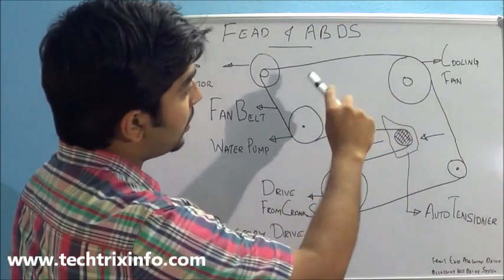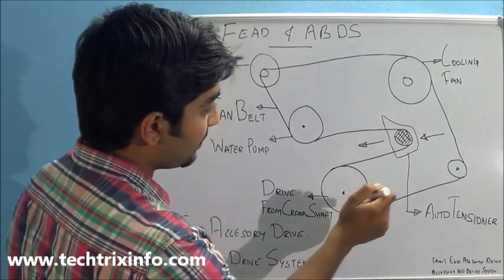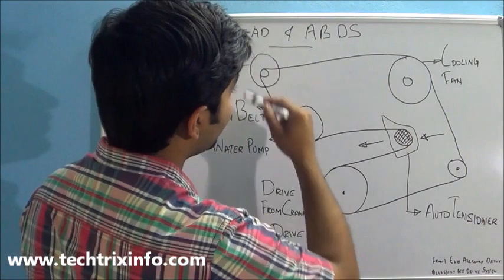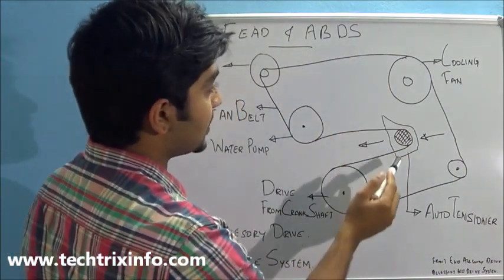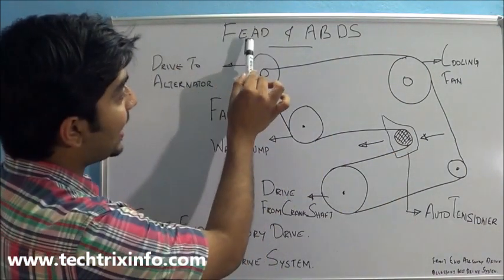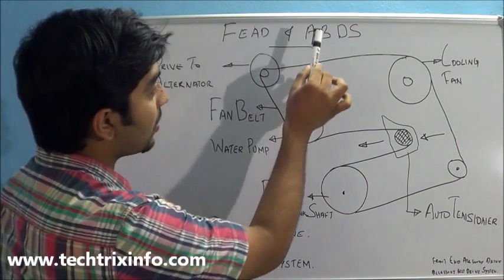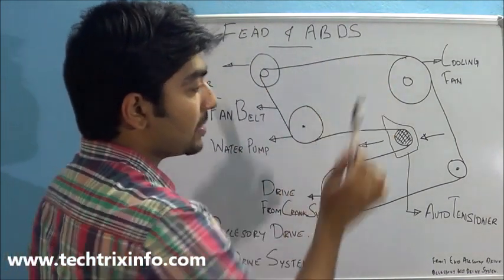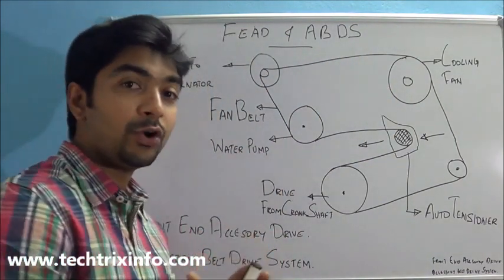So that's the same over here. So the crankshaft gives the drive through the belt to all the accessories. That's called Front End Accessory Drive or Accessory Belt Drive System. So I believe you got an idea about this.